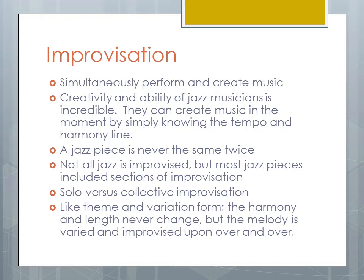There are two kinds of improvisation: solo improvisation and collective improvisation. Sometimes you will have a solo player improvise a melody, and at other times you will have a section or group of players collectively improvise a melody. Improvisation in jazz is much like theme and variation form from the Baroque, classical, and Romantic eras — you have a harmony and a length to the statement of a theme that never really changes, but over top of that the melody is varied and improvised over and over until the musicians feel they've said enough, or you've run out of people to solo. At that point everyone plays the melody together to restate the theme and the song ends.